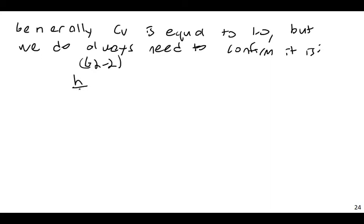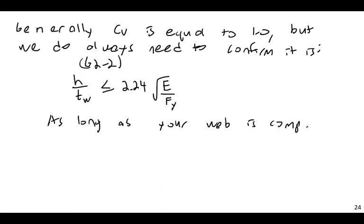And this is found in section G2-2. Basically you're doing a compactness check on the web itself. H divided by TW, not D over TW, but H over TW, is less than or equal to 2.24 times the square root of E divided by Fy. And in almost all cases this is going to be fine. So as long as this is true, as your web is compact here for this criteria for shear, CV will equal 1.0.